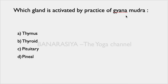Which gland is activated by the practice of Gyana Mudra? Options are Thymus (in the chest), Thyroid (in the throat), Pituitary (in the brain), or Pineal (in the inner chakra region). It is believed that the Pituitary gland is activated by the practice of Gyana Mudra. So the correct answer is Pituitary.